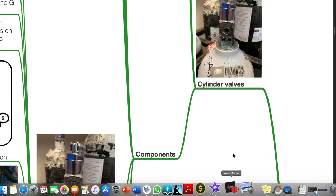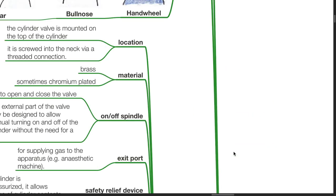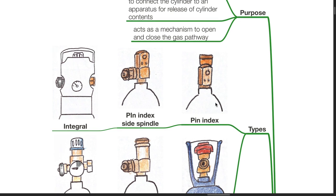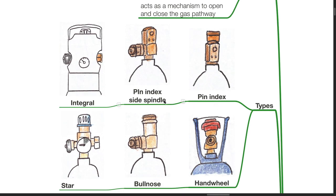Cylinder valves: The purpose of cylinder valves is to seal cylinder contents, to connect the cylinder to an apparatus for release of cylinder contents, and act as a mechanism to open and close the gas pathway. Types of cylinder valves include pin index, pin index side spindle, integral, handwheel, bullnose, and star.